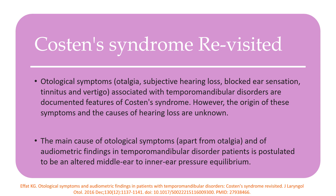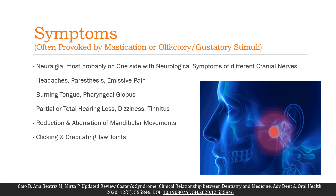Causton syndrome is most preferably applied when a temporomandibular joint disorder presents alongside otological symptoms — hearing loss, blocked ear sensation, tinnitus, and vertigo — attributable to the temporomandibular joint area. The main cause of these otological symptoms is the TMJ itself. Symptoms also include headaches, paresthesia, neuralgia on one side, sometimes partial or total loss of hearing, tinnitus, restricted mandibular movements, crepitation, and clicking.